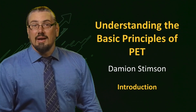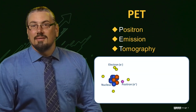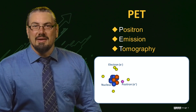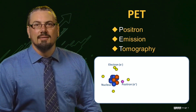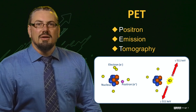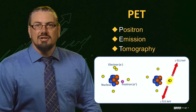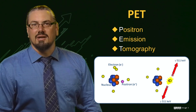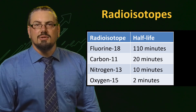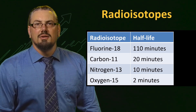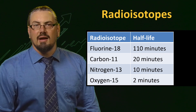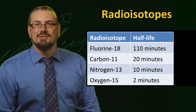Rather than an adorable animal, PET is an acronym for the powerful medical imaging modality, positron emission tomography, that utilises the high energy gamma ray photons generated by positron emitting isotopes. The radioisotopes used in PET typically have very short half-lives and are produced by a cyclotron, as you may have learnt in an earlier section of the course.